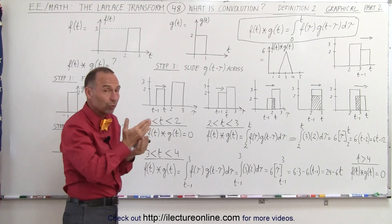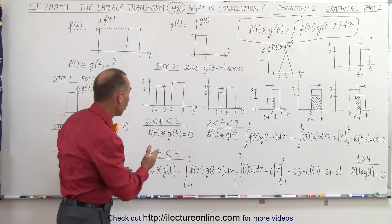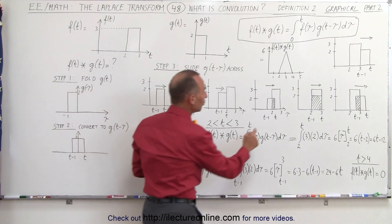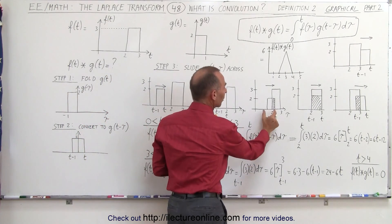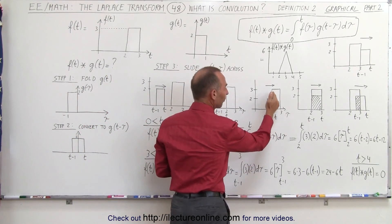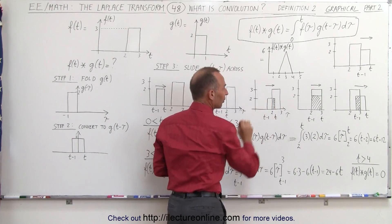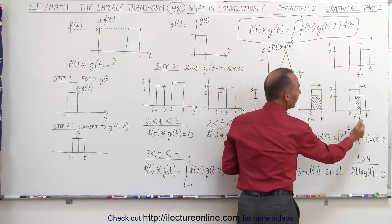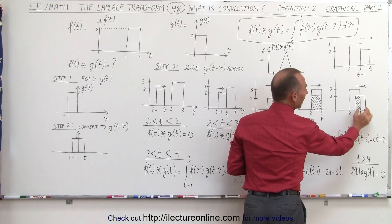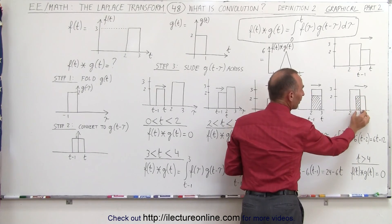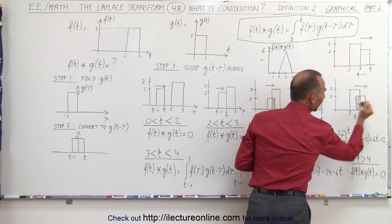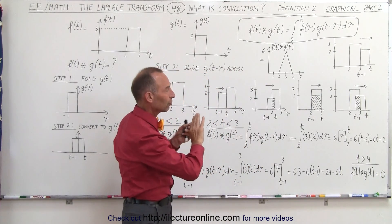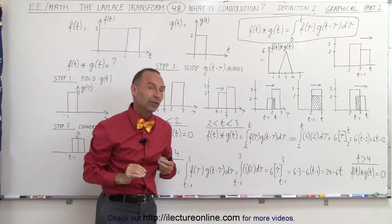We realized there were going to be four regions: a region from zero to two where there's no overlap; a region from two to three where there's a partial overlap of the front of the first function with the second function; then region three from three to four where we have a partial overlap as it's sliding past; and finally region four where the two functions are completely separated from one another.